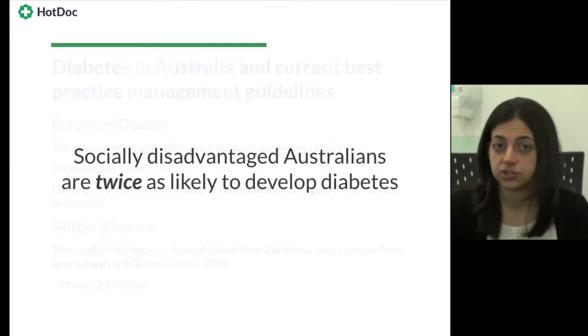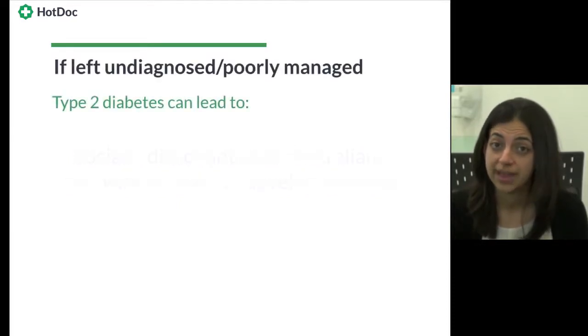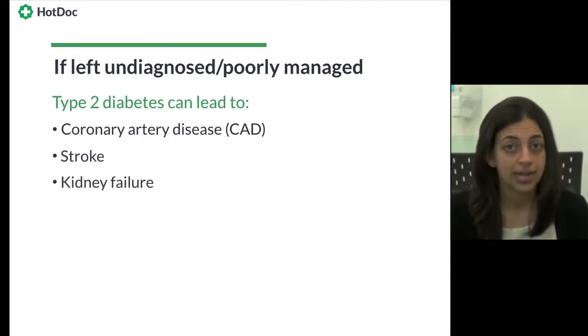The most socially disadvantaged Australians are twice as likely to develop diabetes. If left undiagnosed or poorly managed, type 2 diabetes can lead to coronary artery disease, stroke, kidney failure, limb amputations and blindness. The biggest challenge of managing diabetes is having people change their lifestyle rather than assuming that just a tablet is going to fix their problem. Getting them to understand that it's a chronic relapsing condition, and unless they continue with their lifestyle changes and medications, the natural history of this condition is to deteriorate and lead to other problems.